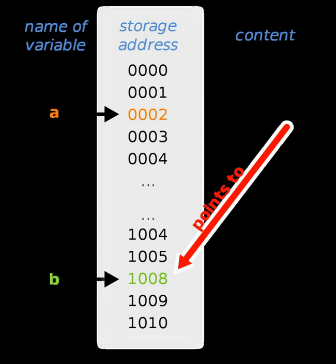In systems with explicit memory allocation, it is possible to create a dangling pointer by deallocating the memory region it points into. This type of pointer is dangerous and subtle because a deallocated memory region may contain the same data as it did before it was deallocated but may then be reallocated and overwritten by unrelated code, unknown to the earlier code. Languages with garbage collection prevent this type of error because deallocation is performed automatically when there are no more references in scope.